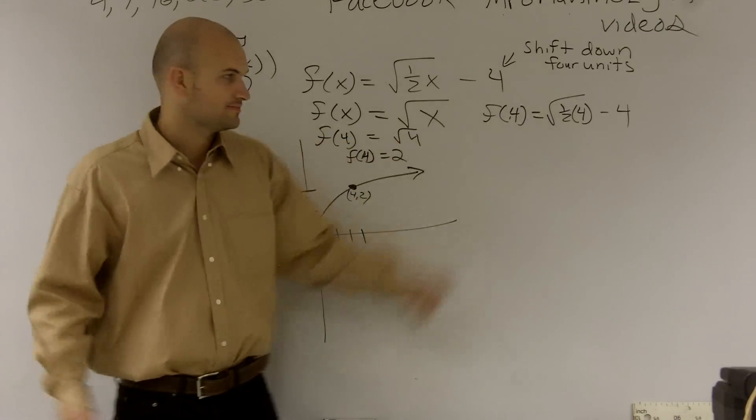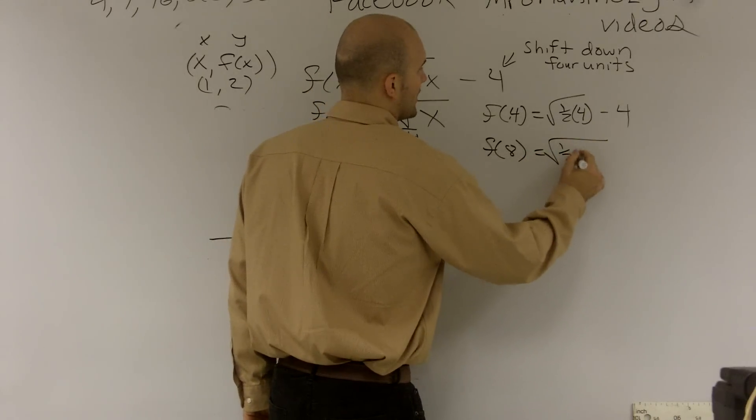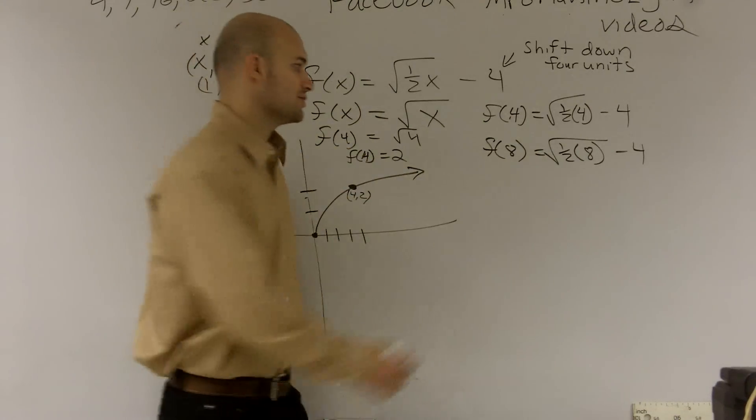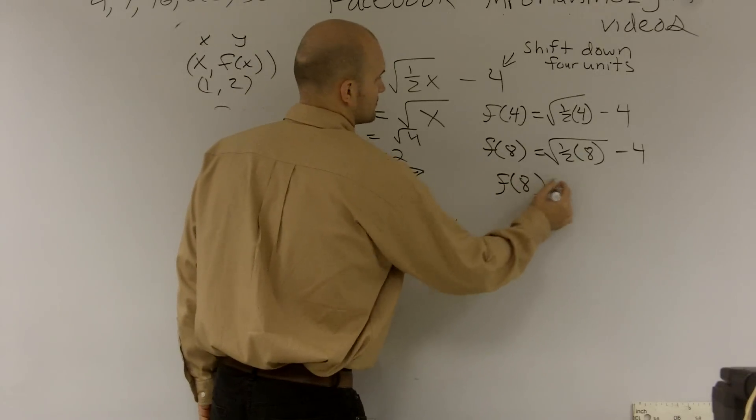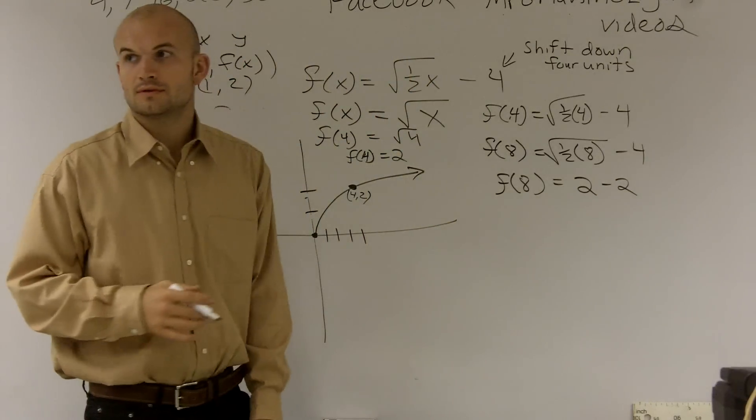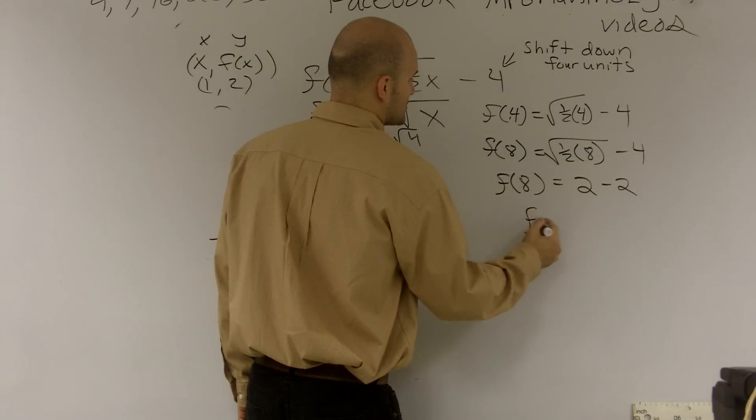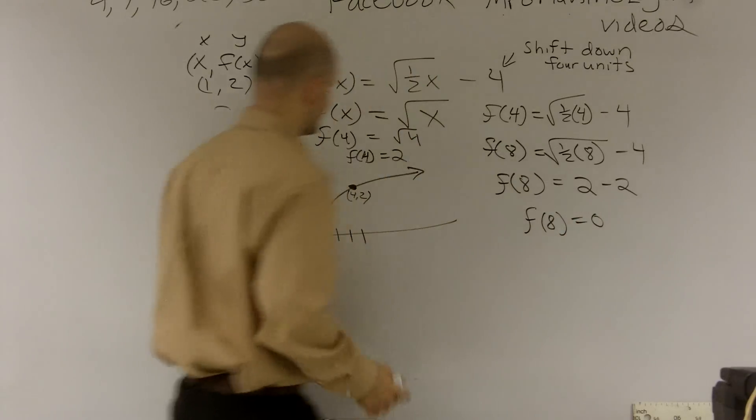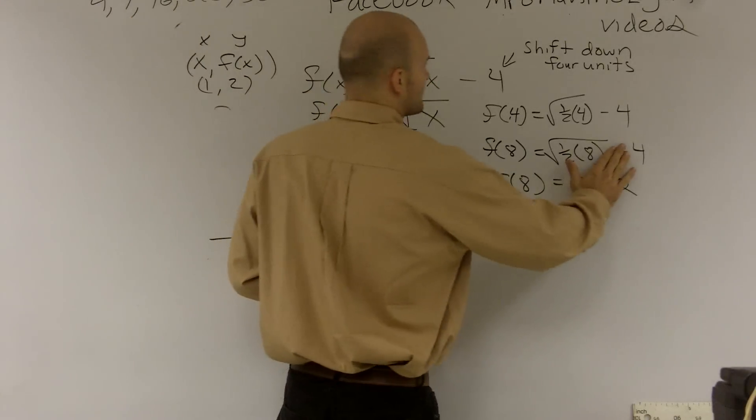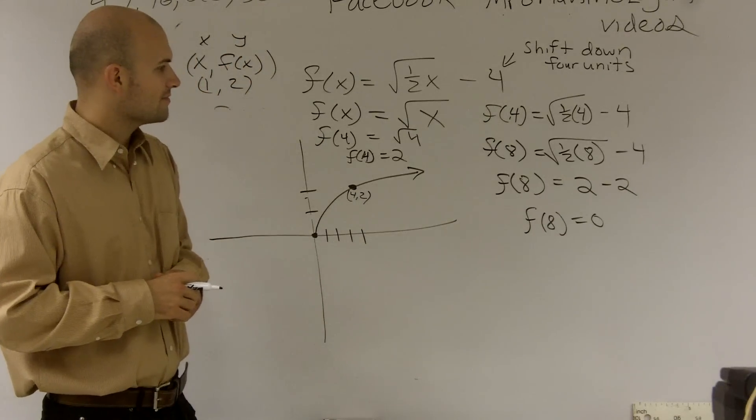So let's do f of 8 equals square root of one half times 8 minus 4. Well, now that's going to give you 4. Square root of that is 2. That's going to be 2. Minus 2 is going to give you 2 minus 2, which is going to be 0. So f of 8 equals 0. And I probably should have... I didn't really want to... Let's actually hold off. I didn't really want to explain exactly that point right there.